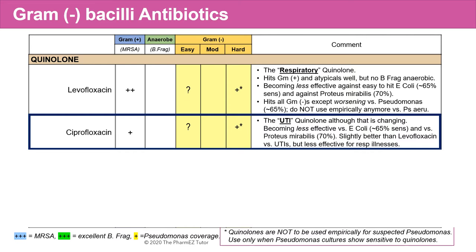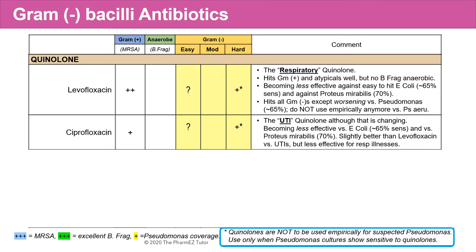Ciprofloxacin is considered the urinary tract infection quinolone. It's very similar to levofloxacin in terms of sensitivity, slightly better for UTIs but much less effective against respiratory illness. Quinolones are not to be used empirically for suspected Pseudomonas, but only when Pseudomonas culture shows sensitive to quinolones.